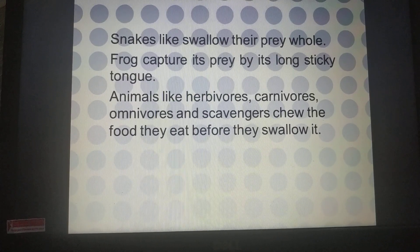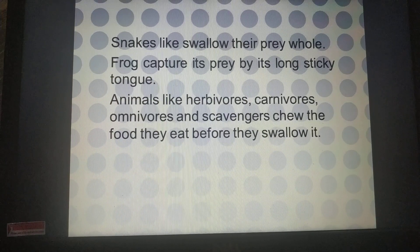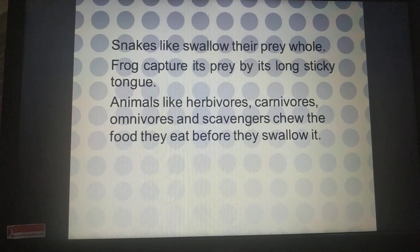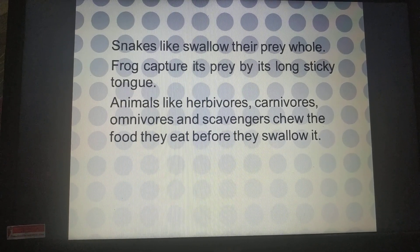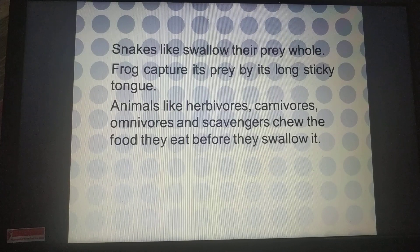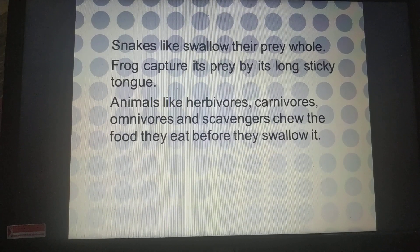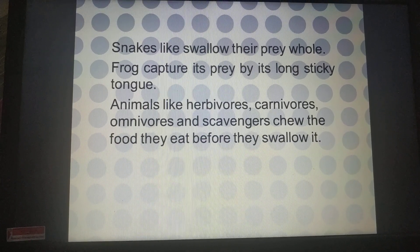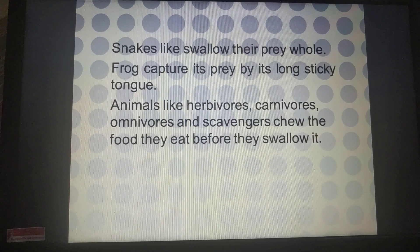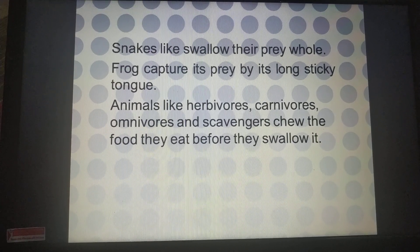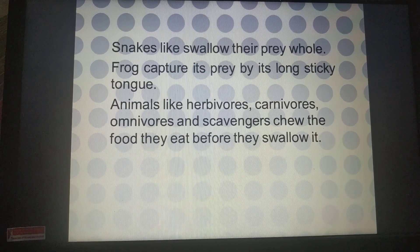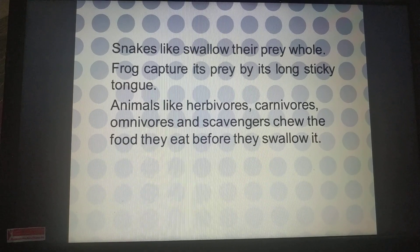Snakes, like reptiles, swallow their prey whole. Large snakes like python swallow their food — frogs, lizards — whole. Frogs capture their prey using their long sticky tongue. Small insects like flies, bees, and mosquitoes are captured by the frog when they get stuck on its tongue.